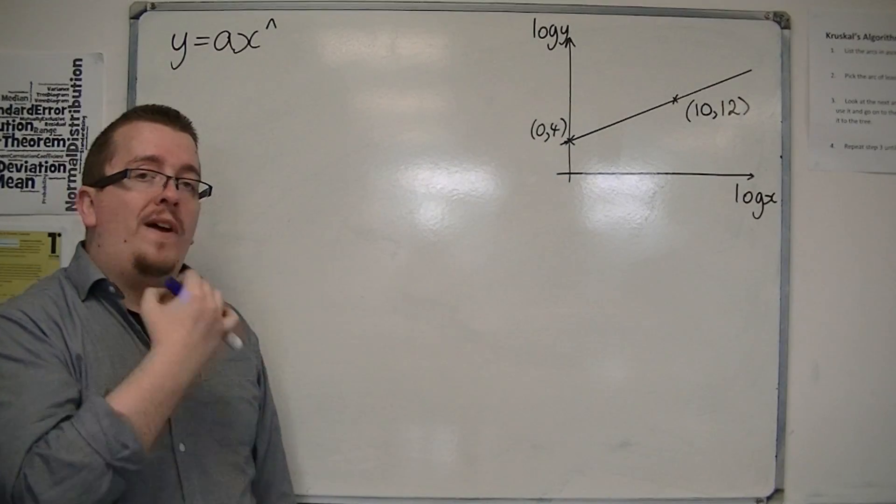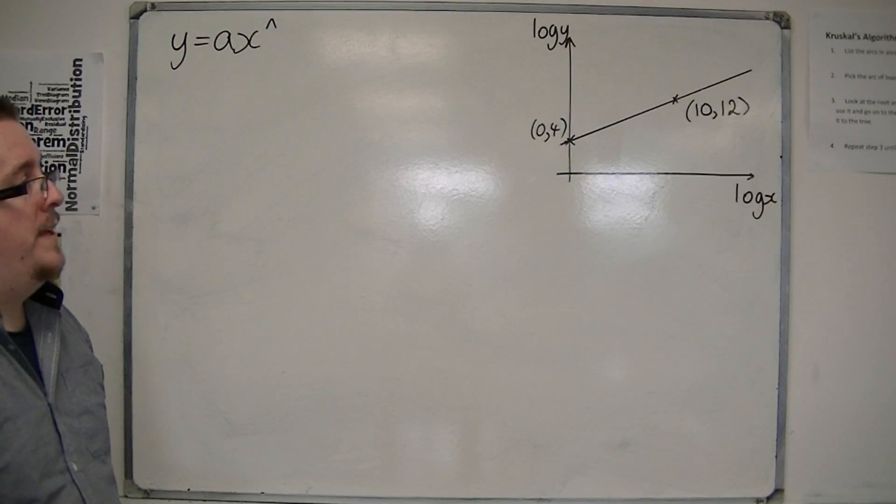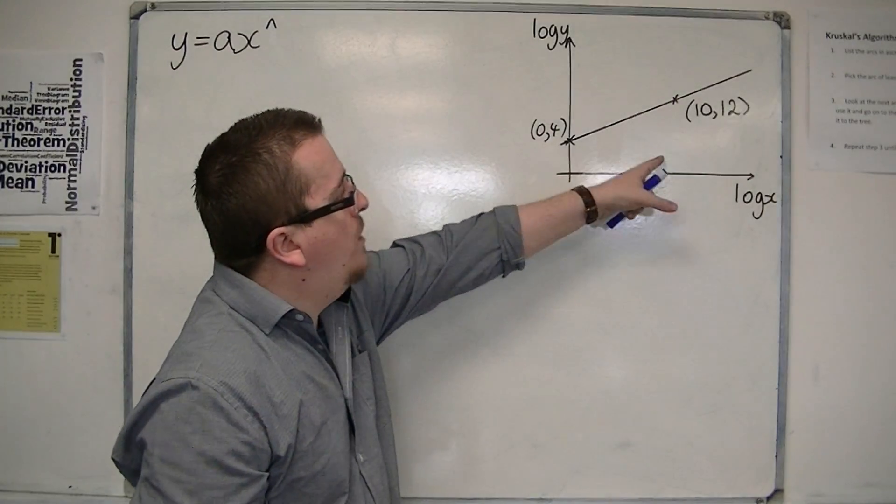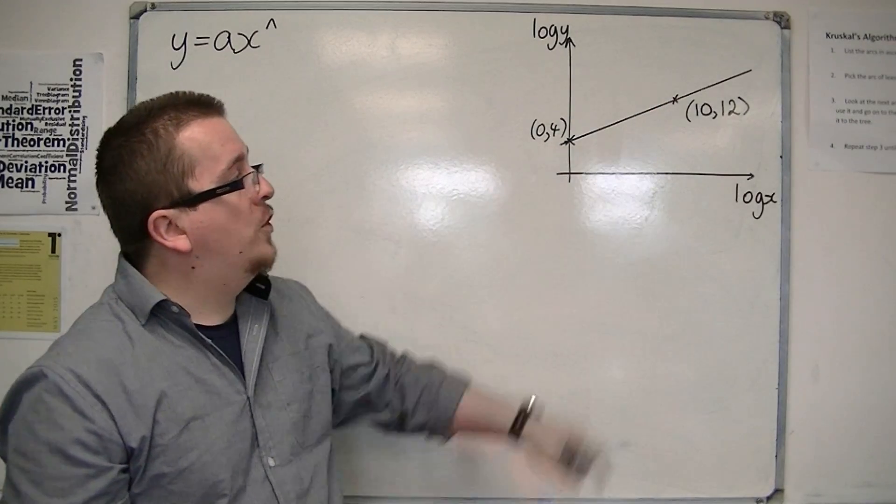So I need to work out what the value of a and what the value of n would be. So what I'm going to do is find the equation of this line.